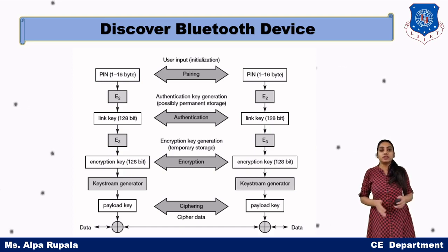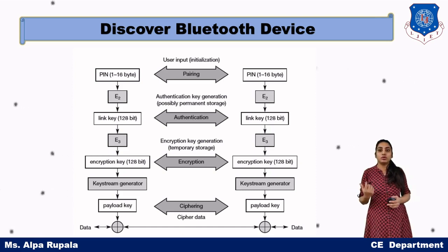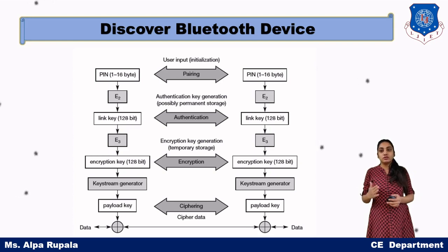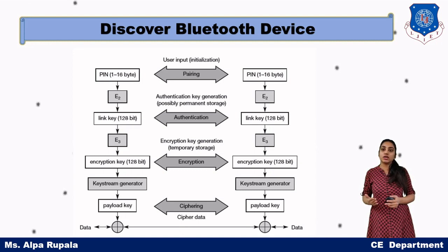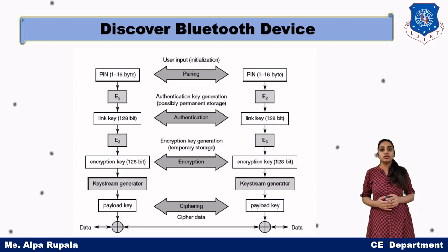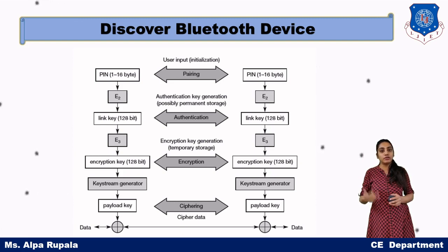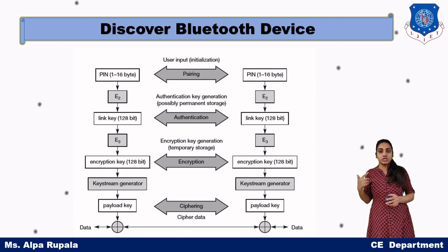When transferring data it must be secure. For security purposes, we generate a payload key. We take the 128-bit encryption key and pass it to a key strength generator, which generates the payload key. We then XOR our original data with the payload key to get the cipher data. That cipher data is transferred from one Bluetooth device to another. So the process for first-time communication is: pairing, encryption, and ciphering. If devices are already paired, the steps are: authentication, encryption, and ciphering.